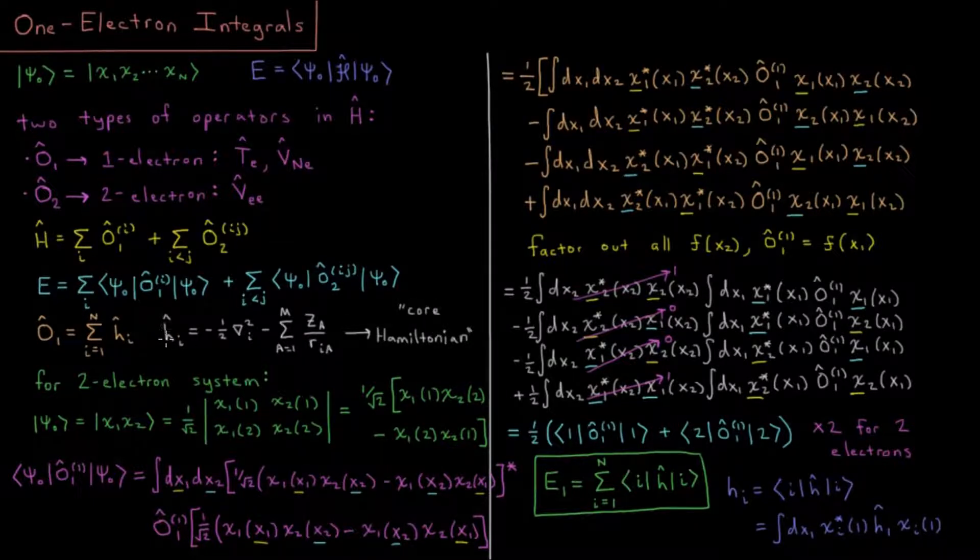For each individual electron, we're going to have its kinetic energy operator, negative one-half del squared i. Del squared being the second partial derivative of each spatial dimension of that electron added up.